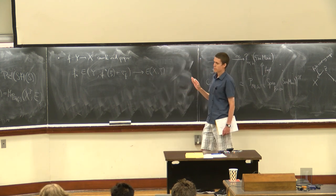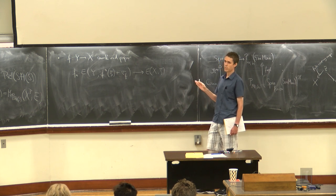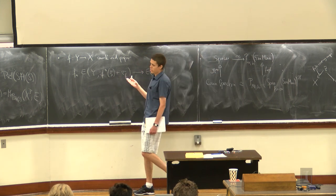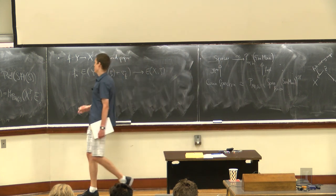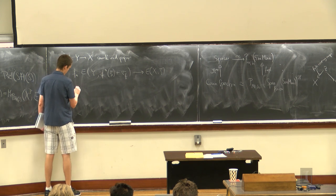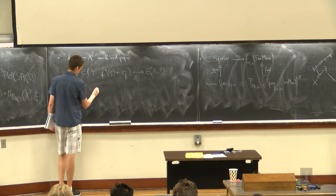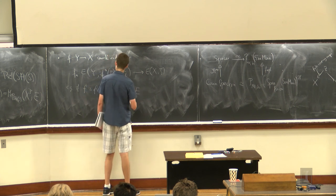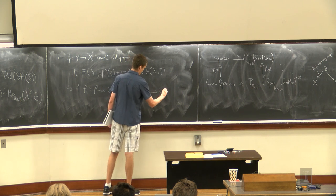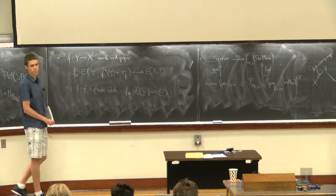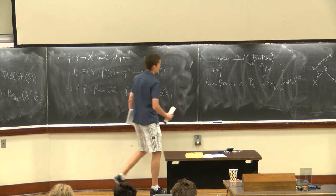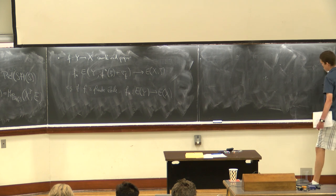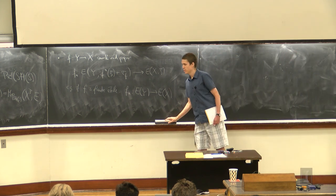What we're really interested in are transfers that are not dimension-shifting — actual covariant functoriality. We get that only when the relative tangent bundle has rank zero, meaning the map has to be finite étale. In particular, if f is finite étale, we have an actual push-forward from the cohomology of Y to the cohomology of X. But in fact, in this algebraic context we have even more transfers, coming from the theory of the virtual fundamental class.